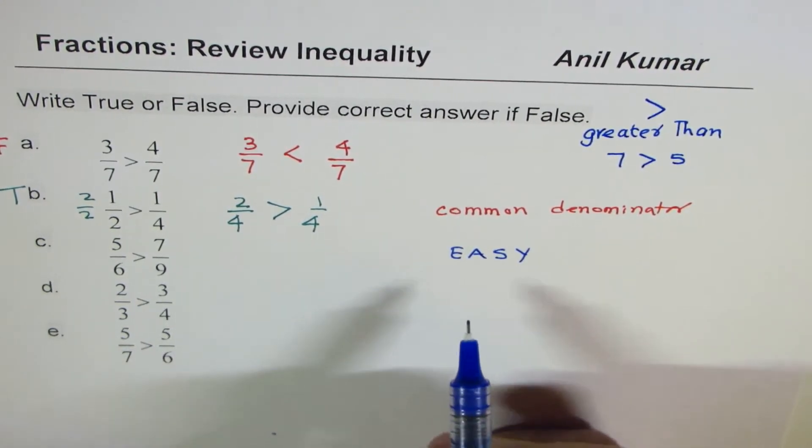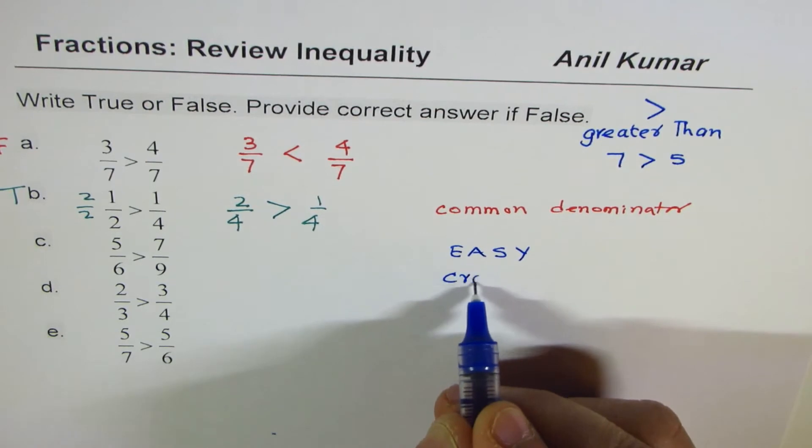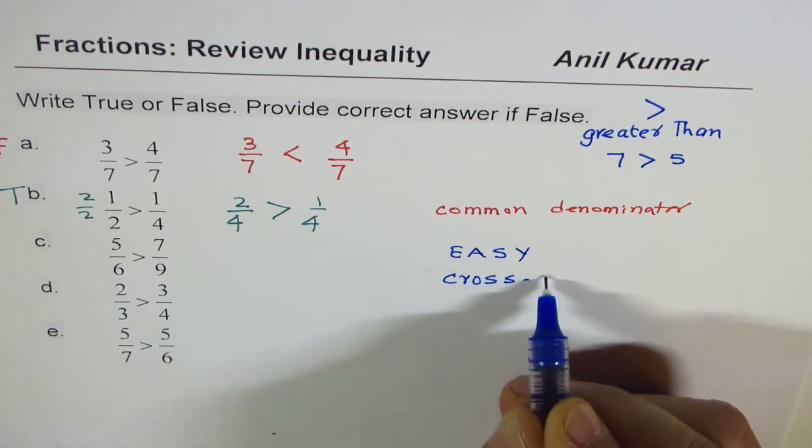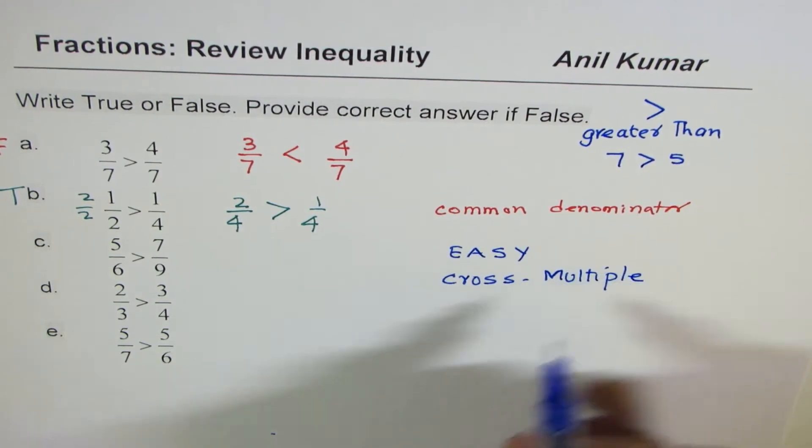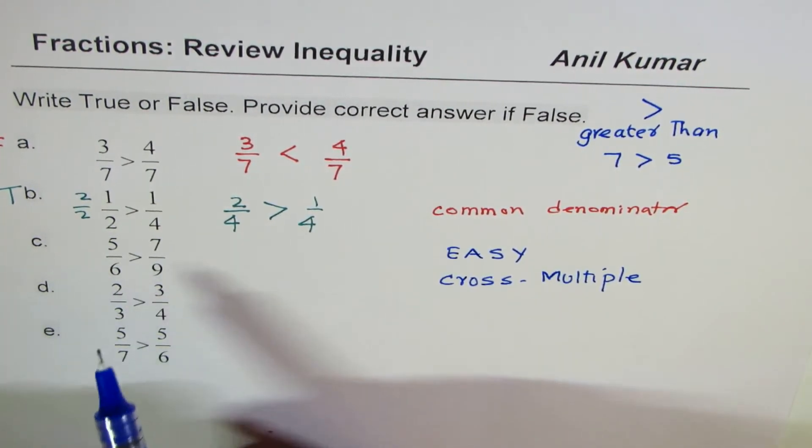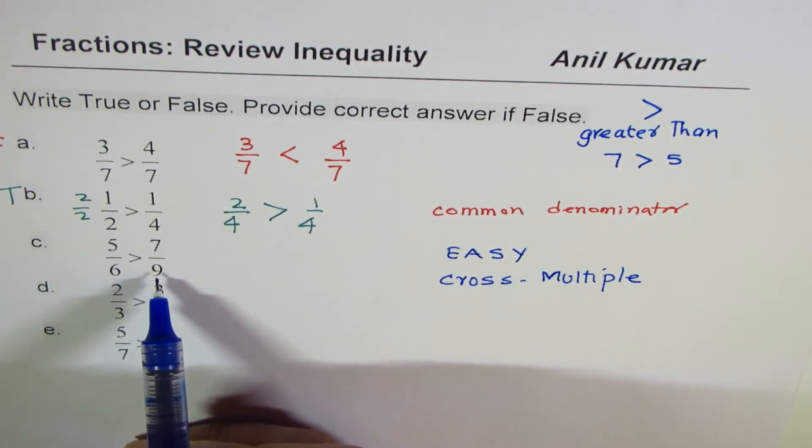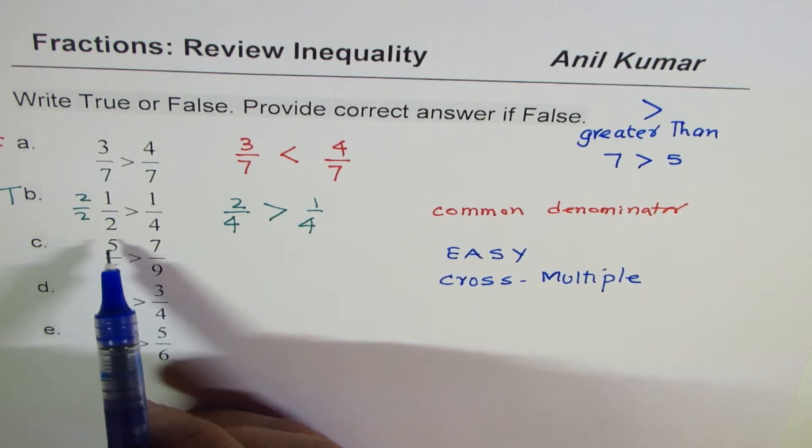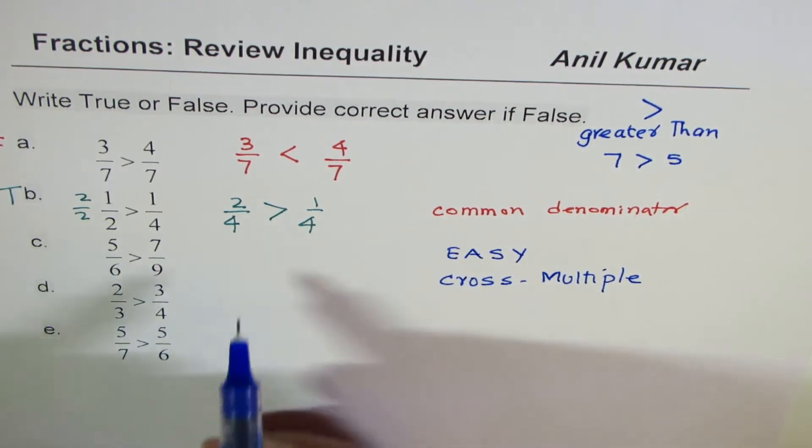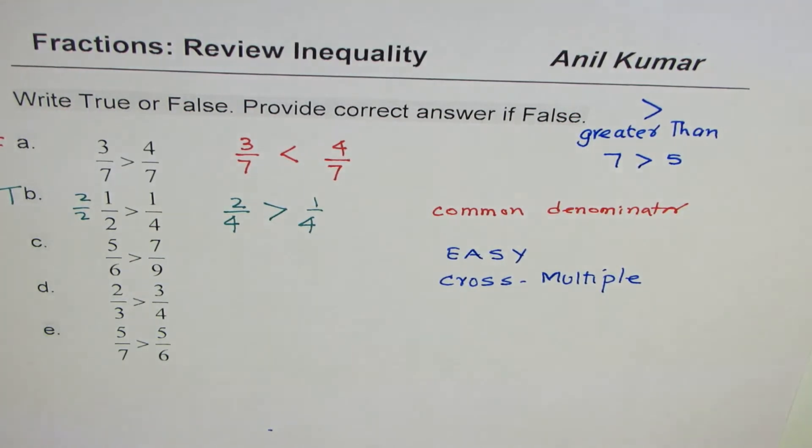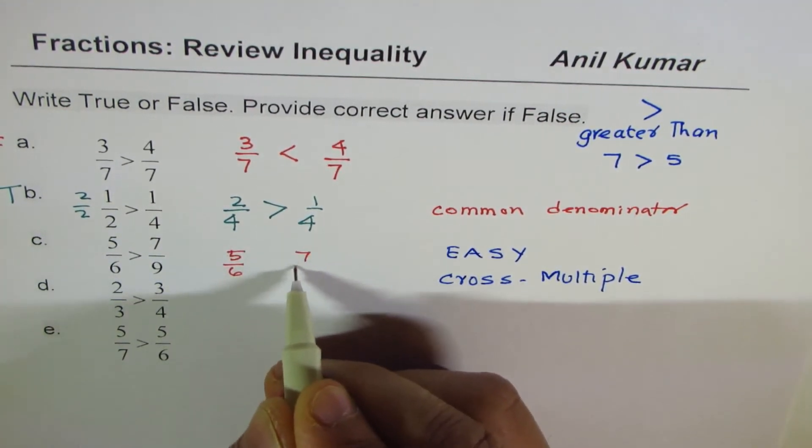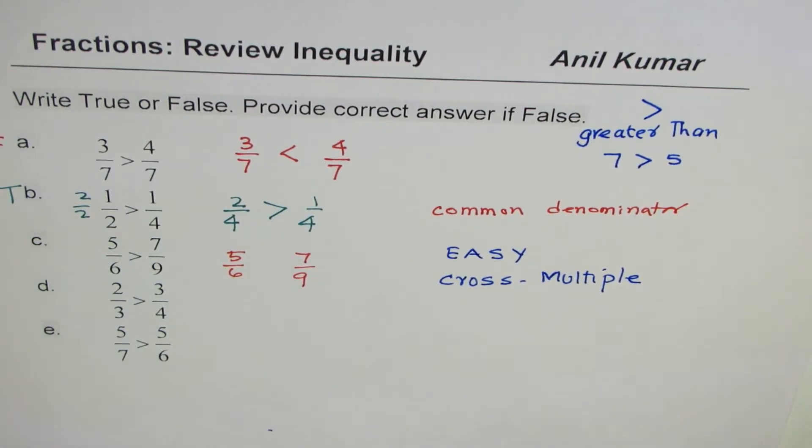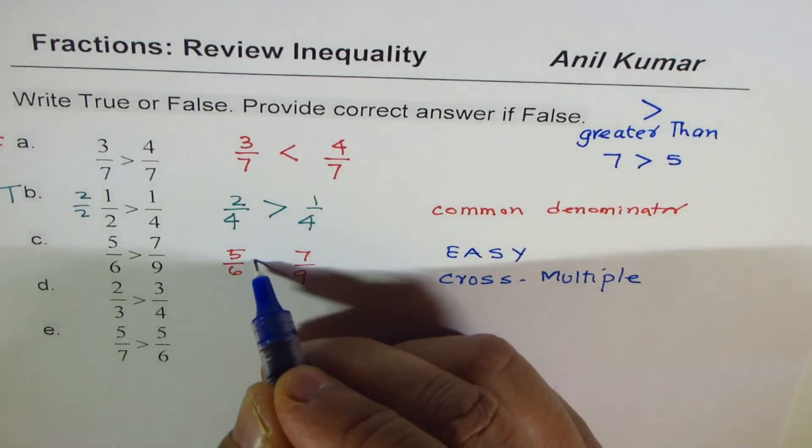What is the easy way? I call it cross multiply. See how easy it becomes. So in cross multiply you multiply this number 5 by 9. What do you get? 5 times 9. Let me show you here. We are given 5 over 6 and 7 over 9, correct?